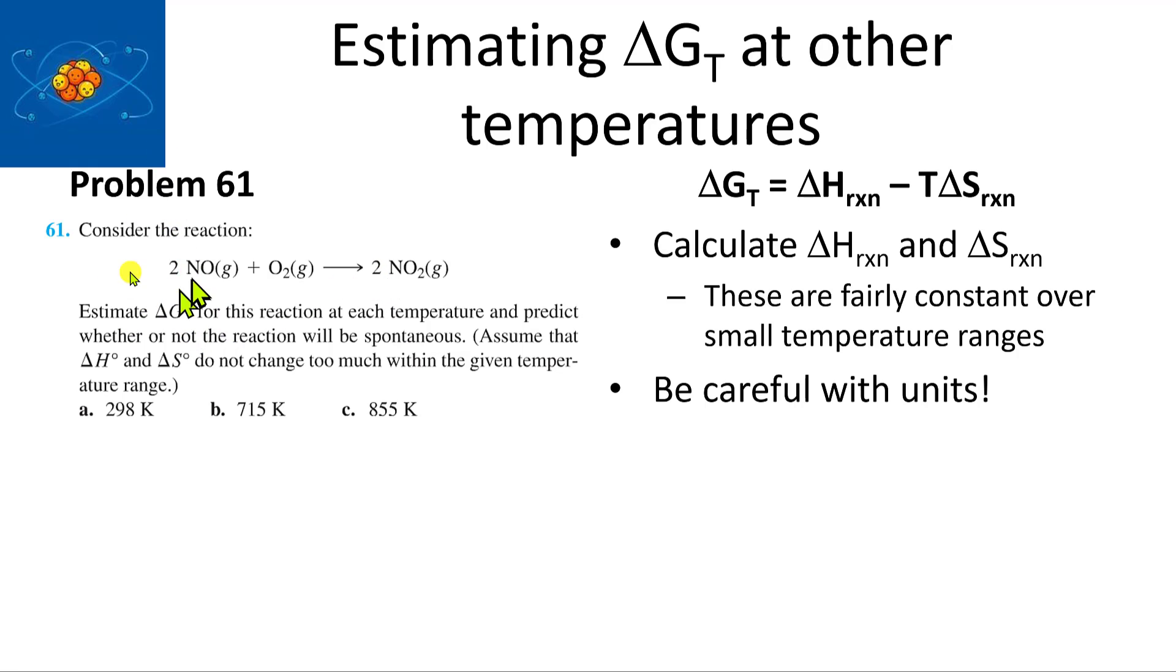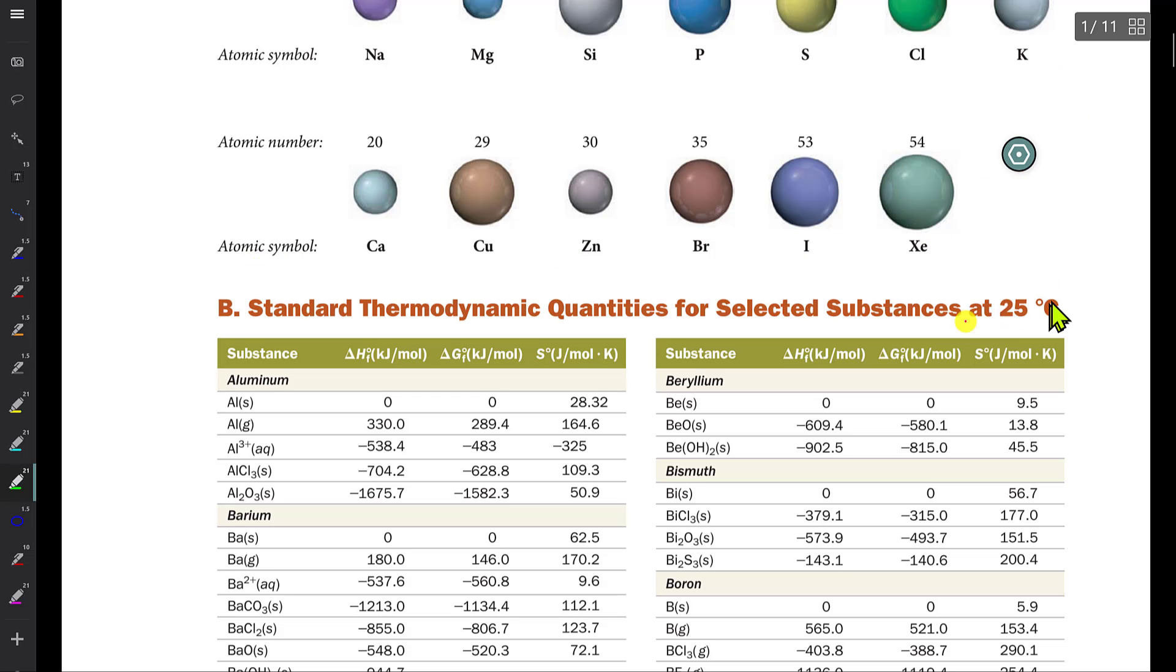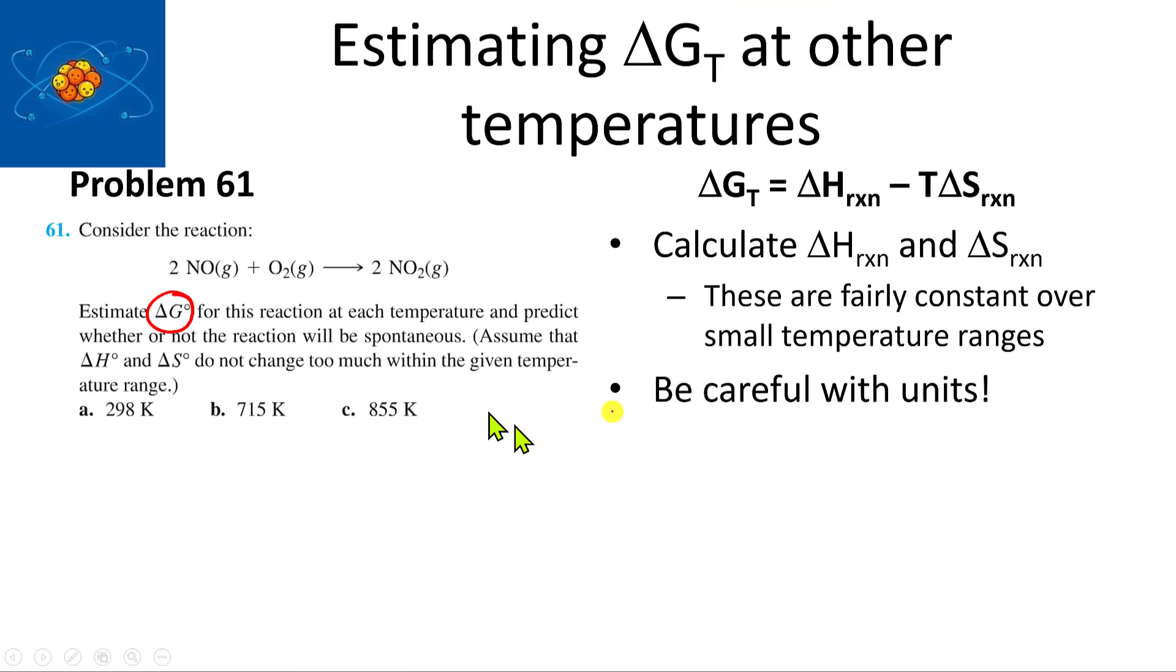When you calculate delta G, one of the things about the table is it's all at 25 degrees Celsius. If you want to do something at a different temperature, how do you get that number? What we do is usually estimate that number by assuming delta H and delta S don't change with temperature much.